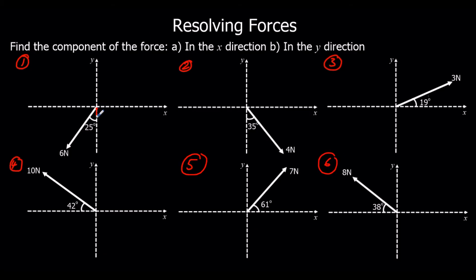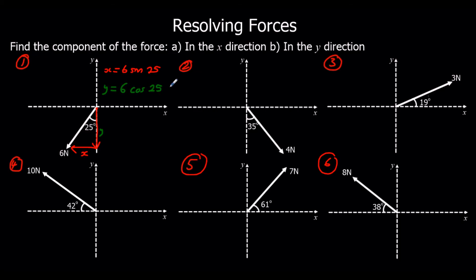So in the first case, the force in the x-direction is the opposite, so it's sine: x equals 6 sin 25, or negative 6 sin 25 because it's backwards along the x-direction. Y is the adjacent, so that will be 6 cos 25, and again that will be negative 6 cos 25 because it's down the y-axis.